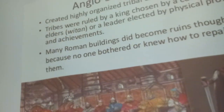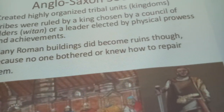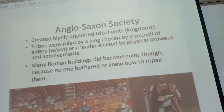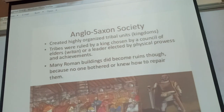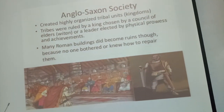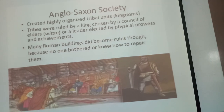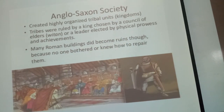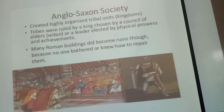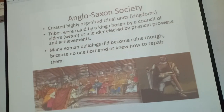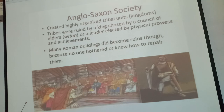Anglo-Saxon society: they created highly organized tribal kingdoms. Tribes were ruled by a king chosen by a council of elders called the Witan, or a leader elected by physical powers and achievements. Many Roman buildings became ruins because no one bothered or knew how to repair them.